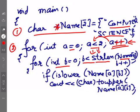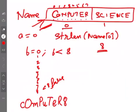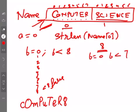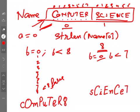Now a++ makes a=1. Check: 1<2 is true, so we re-enter the outer loop. b resets to 0. Now b<strlen(name[1]), which is strlen of 'SCIENCE': 7 letters (positions 0 to 6). So b runs from 0 to less than 7. Applying the same logic: 'S' at even position → lowercase 's'; 'C' at odd → as-is; 'I' at even → lowercase 'i'; 'E' at odd → as-is; 'N' at even → lowercase 'n'; 'C' at odd → as-is; 'E' at even → lowercase 'e'. Then b=7 is printed.